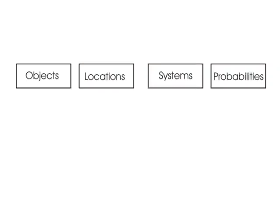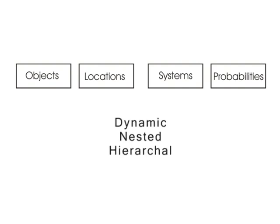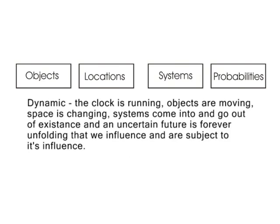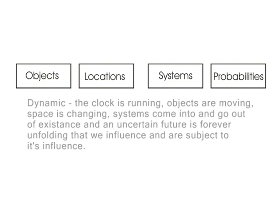It's at this last level that the complexity of the visual search really gets going. In a game, objects, systems, locations, and probabilities have a dynamic, nested, and hierarchical relationship. Soccer is dynamic because it's an event — it exists in time, and the objects and locations share transient, evolving relationships.